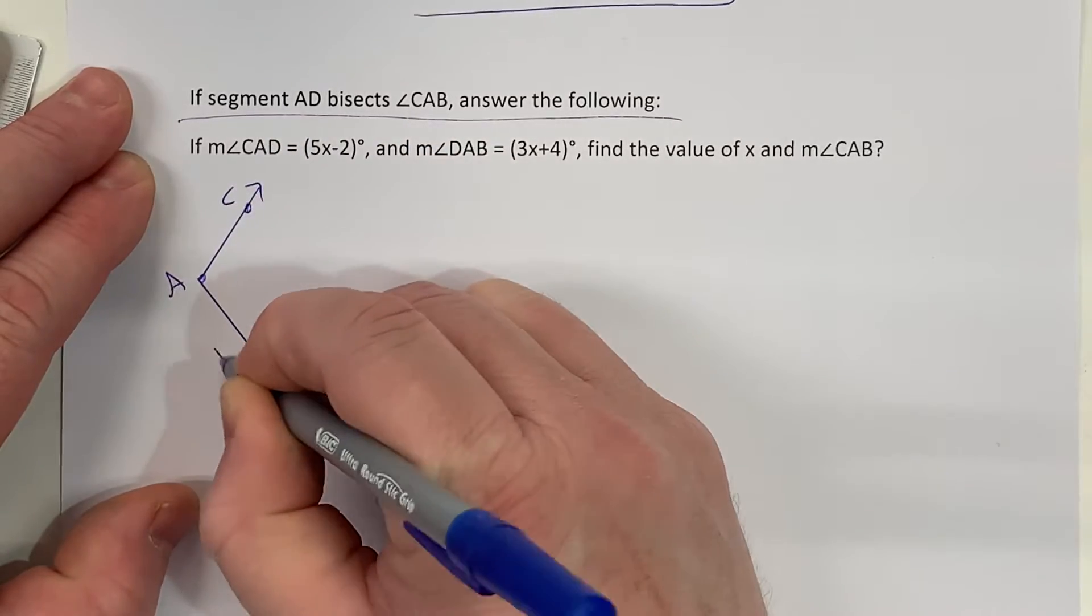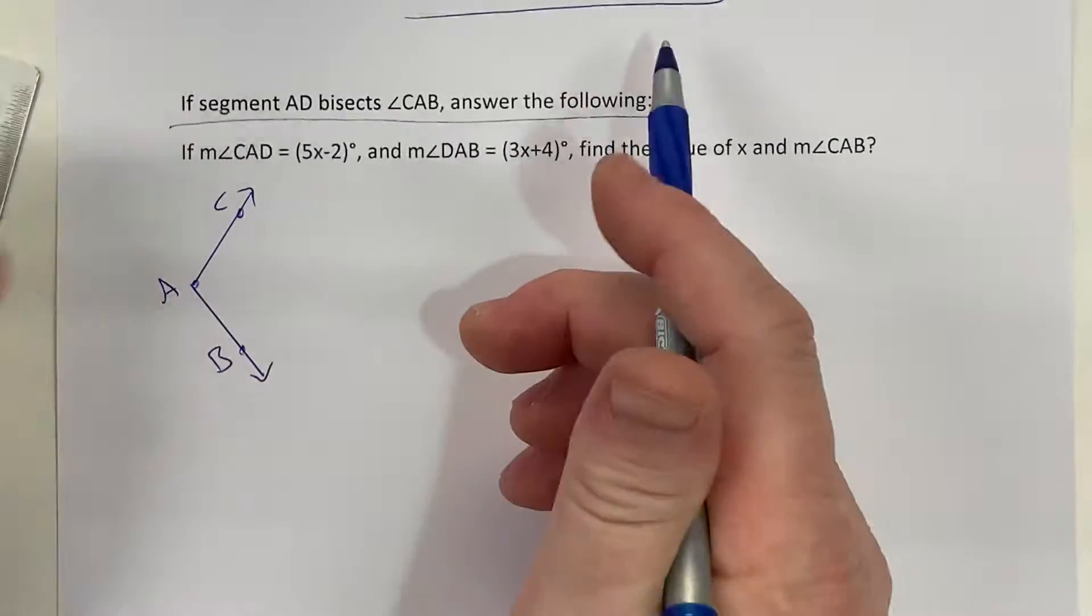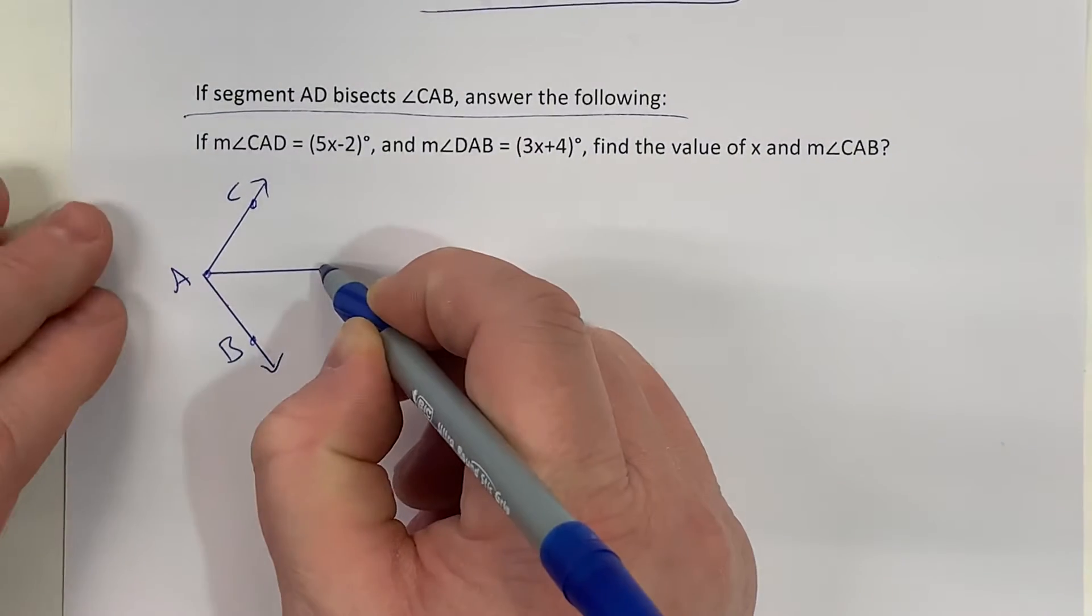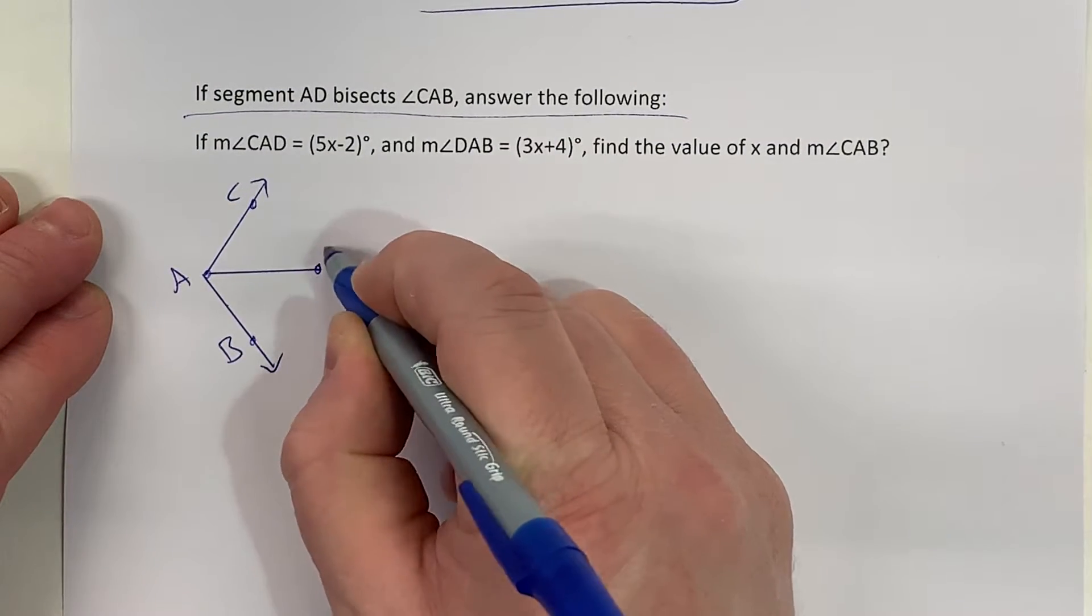Now that I have CAB drawn, I want to do that angle bisector. So my angle bisector, remember, splits the angle into two identical pieces, two identical angles. So this is CAD.